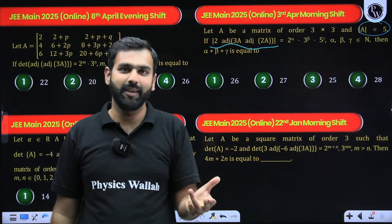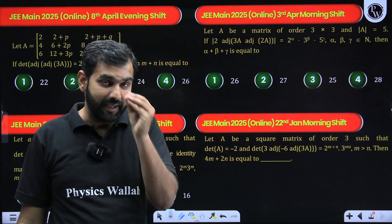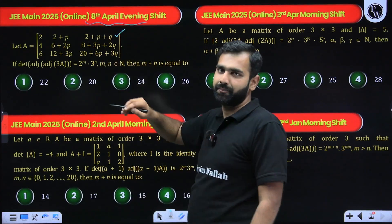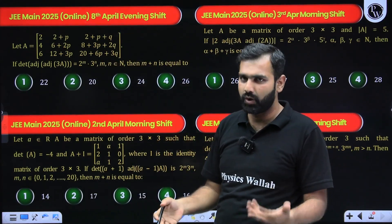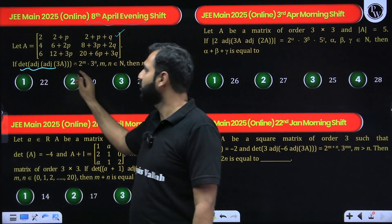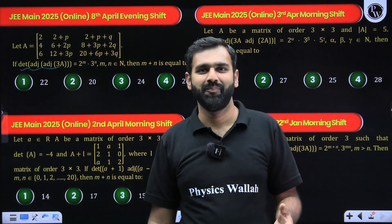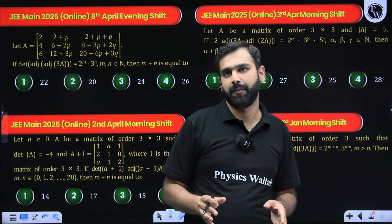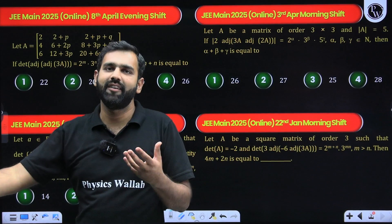Forget that. 8th of April evening shift: a matrix is given, you can figure out its determinant by using operations, then determinant of adjoint of adjoint of that matrix. All I'm trying to make you understand is this exam is predictable. So if you watch the live analysis, if you watch these sessions where you get more clarity about what kind of questions are being asked every year and every shift.